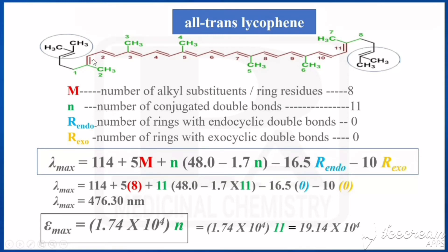For all-trans-lycopene, R_endo = 0 because it does not have any rings with endocyclic double bonds. Similarly, R_exo = 0. By substituting these values into the equation, we get lambda max = 476.3 nanometers. For epsilon max, using εmax = 1.74 × 10^4 × n with n = 11, we get εmax = 19.14 × 10^4 for all-trans-lycopene.